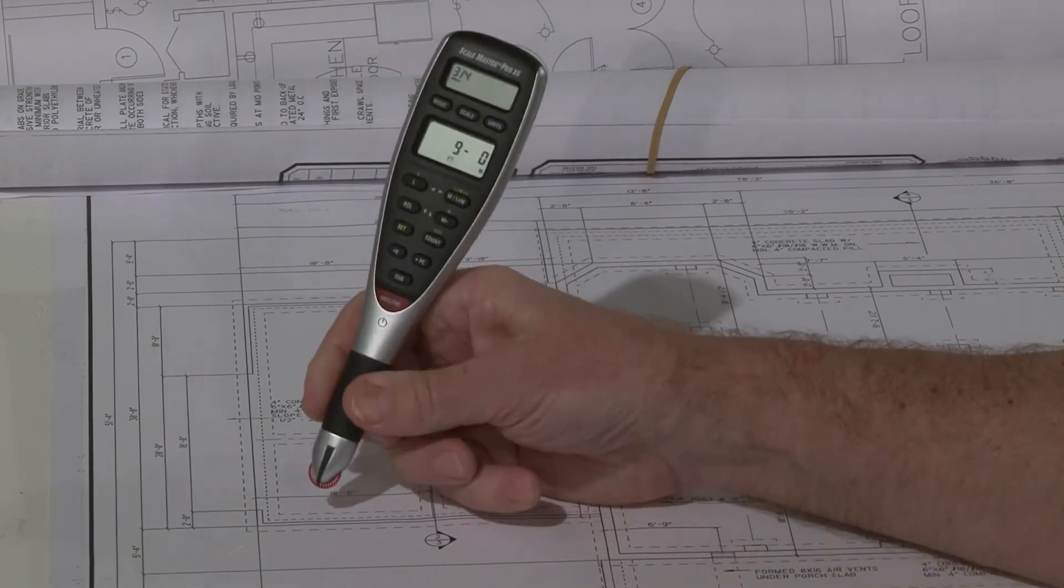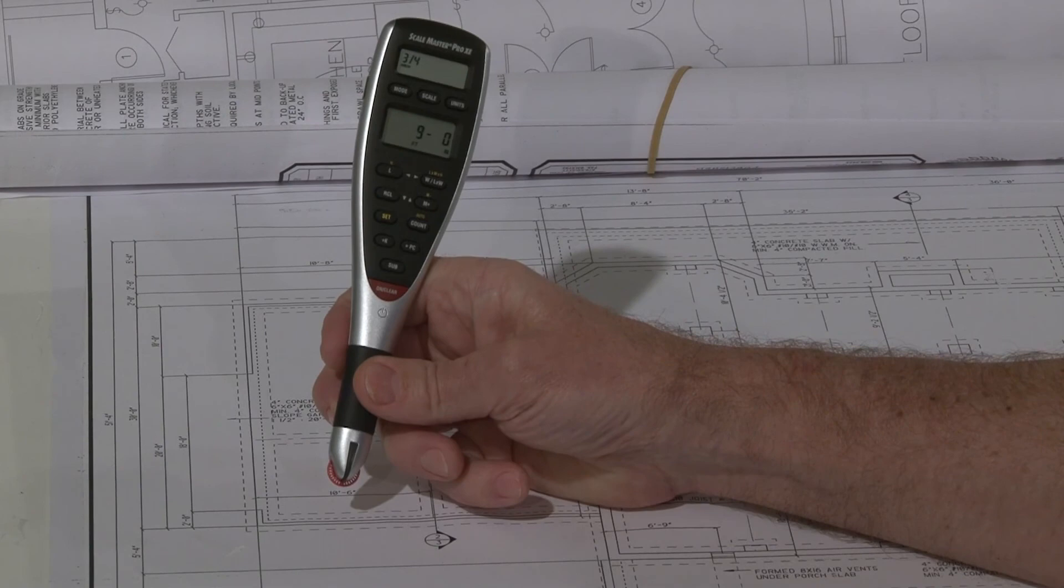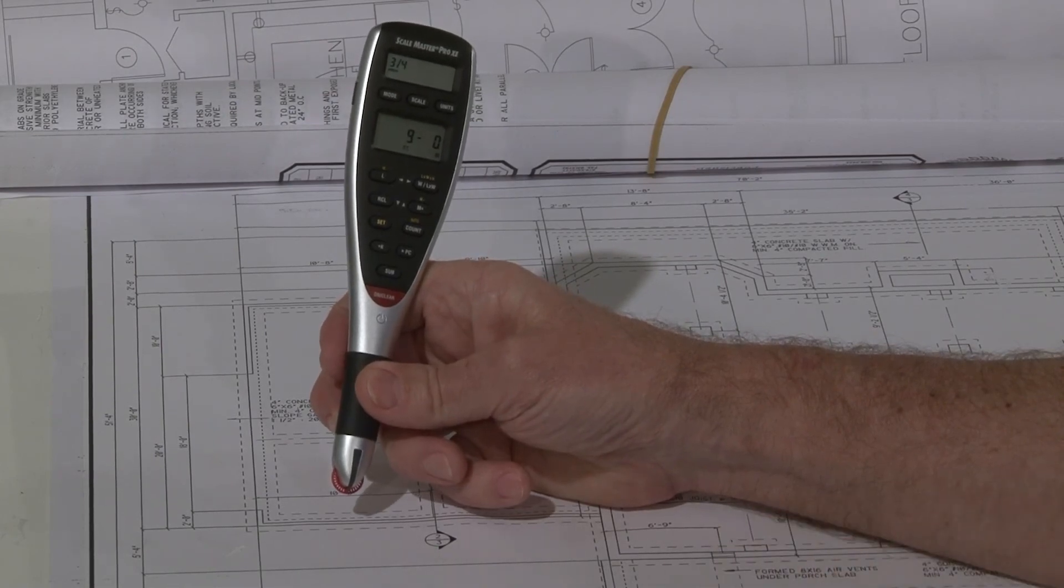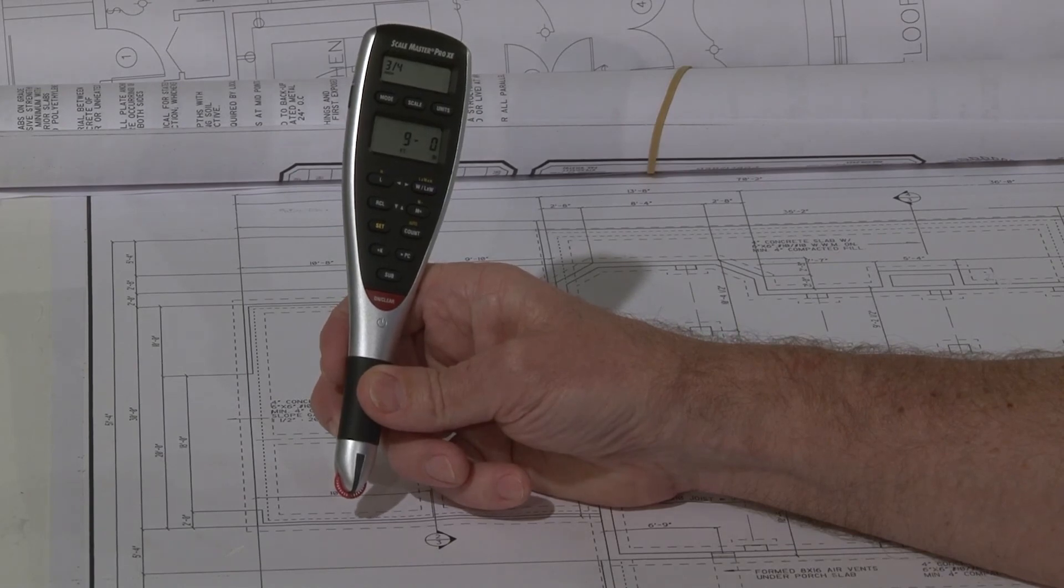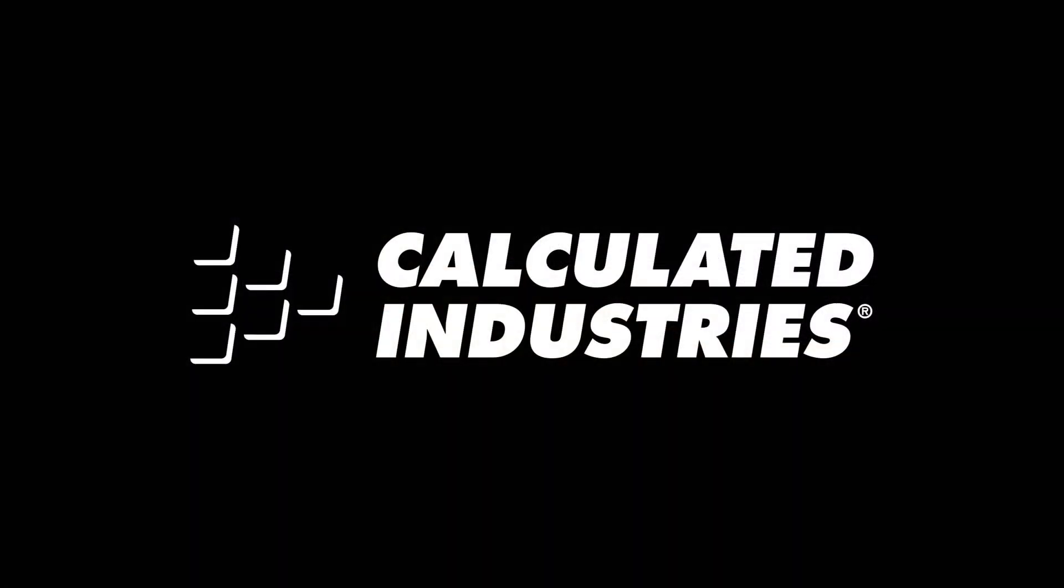If you follow all of these guidelines, you'll tend to get an average accuracy in the one to two percent range. So that's a quick overview on the general operation. For more details, you can download our user guide at www.calculated.com slash support.